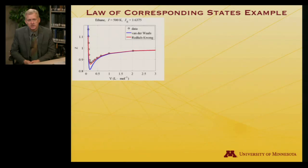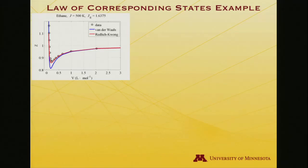All right. Well I just want to drive home the key point one more time associated with this particular piece of the lecture video. And that is the corresponding states. They correspond when they are considered at conditions relative to their critical conditions. So let's just look at a couple specifics instead of trying to plot 25 different gases all on one plot. So shown here is the behavior of ethane gas at 500 Kelvin,